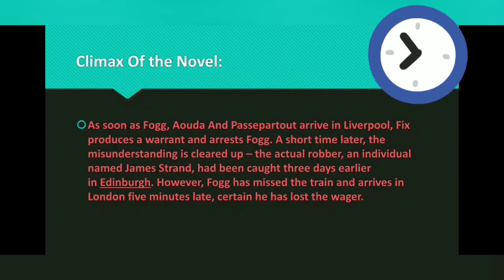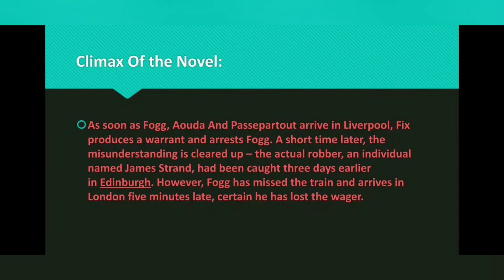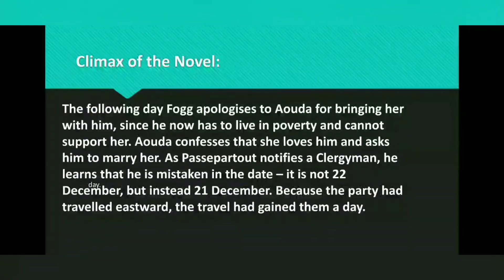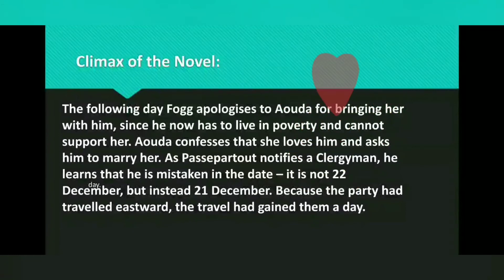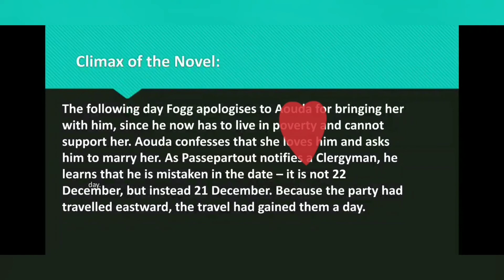However, Fogg has missed the train and arrives in London five minutes late, certain he has lost the wager. The following day Fogg apologizes to Aouda for bringing her with him, since he now has to live in poverty and cannot support her. Aouda confesses that she loves him and asks him to marry her. As Passepartout notifies a clergyman to arrange their marriage, he learns that he is mistaken in the date — it's not 22nd December but instead 21st December.